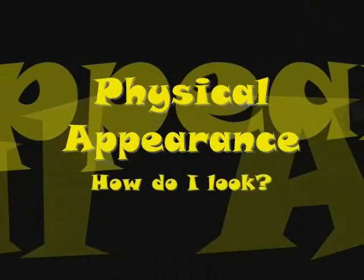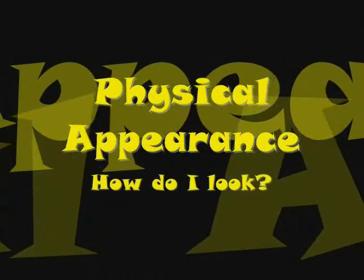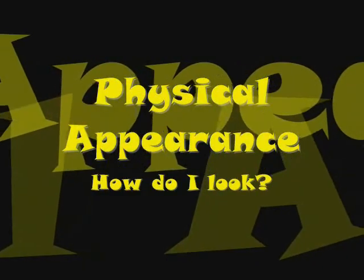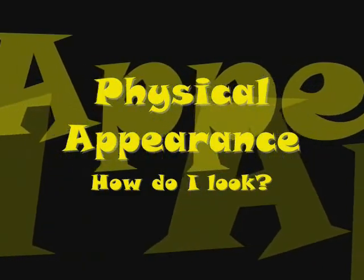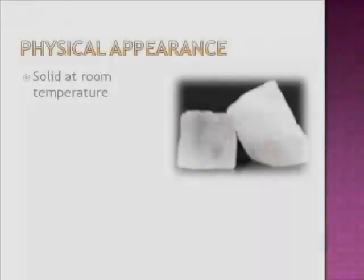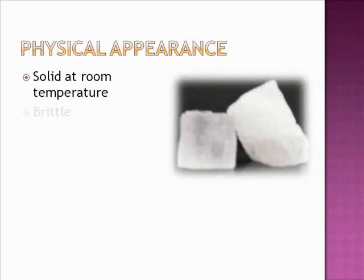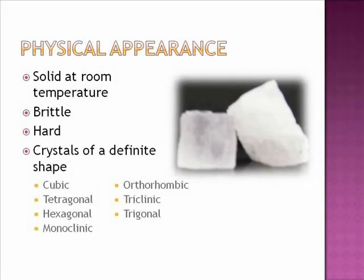The first set of properties that are characteristic of ionic compounds fall into the category of physical appearance. In all cases, ionic compounds are hard, brittle solids at room temperature. In addition, they all form crystals with a definite shape. Here you can see a listing of the main descriptions of the crystals formed by ionic substances. These shapes can be used by scientists to determine the identity of the compound.